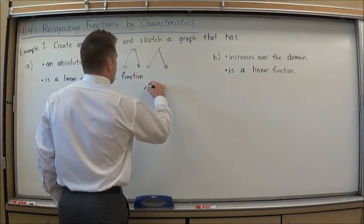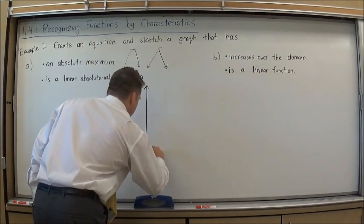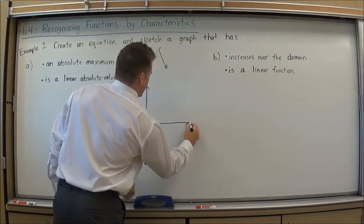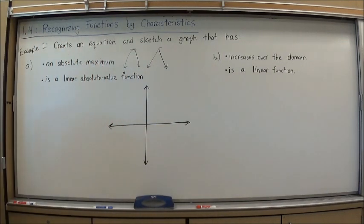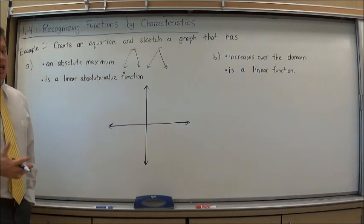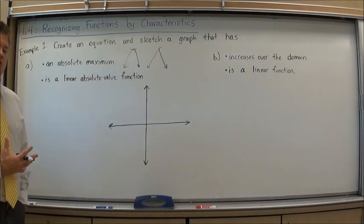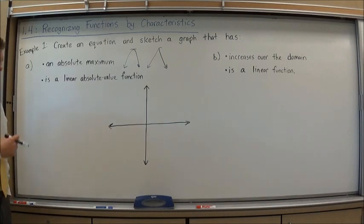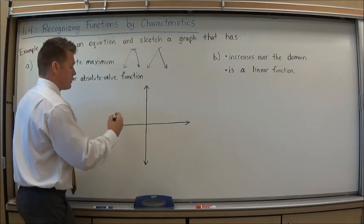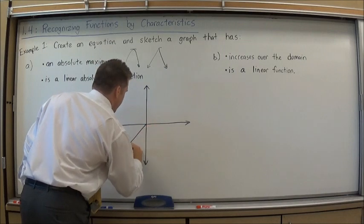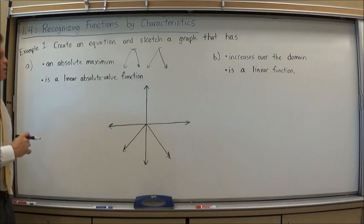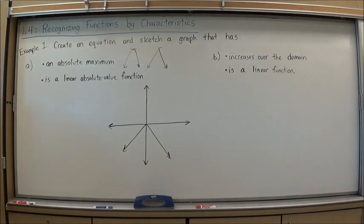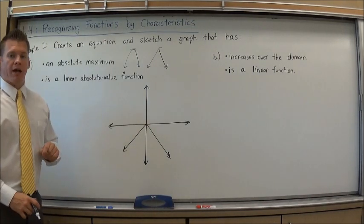I'm going to do my sketch part first. When sketching these, I suggest you sketch the most basic form that you can, especially since it says to write an equation with it. The equation changes quite a bit as we move these graphs. Since we haven't gotten into that yet in this course, I would keep everything centered here at the origin. So I'm going to just draw a linear absolute value function that's going downwards so that it has an absolute maximum.